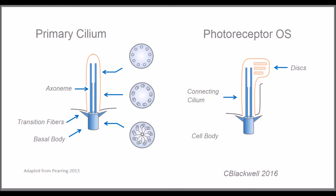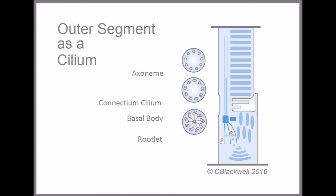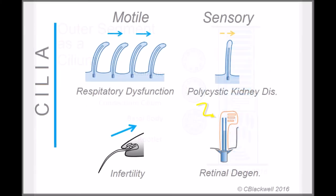Thus, the finished product, with the basal body as the anchor for the axoneme, the backbone of the outer segment. When the cilia do not function correctly, that leads to a category of disease called ciliopathies, with some examples shown here.